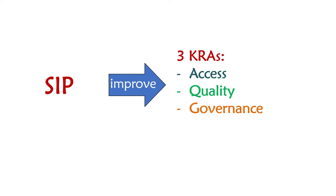The SIP involves three key result areas to improve. As a school leader, you look at these different aspects. Access refers to how you're going to make education available to all, because the constitution tells us that education should be given to as many people as possible — to all Filipinos — regardless of their ethnicity, gender, or whatever differs us from each other. Quality refers to the quality of education that you deliver; we want it to be of high quality so it can help learners in their lives. Governance refers to how we manage the school and ensure that administrative procedures are well in place.